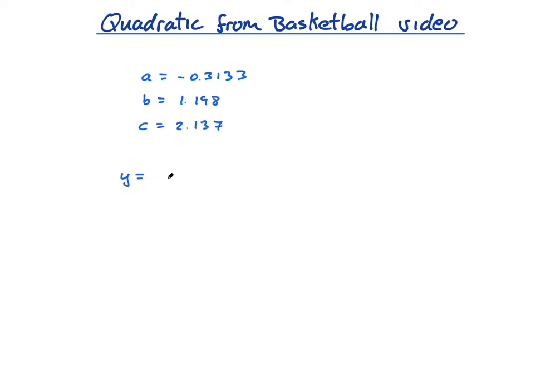So my function is y = −0.3133x² + 1.198x + 2.137. That's just what I wanted to show you in this lesson. In the next lesson, I'm going to take this function and show you different ways we can analyze it using calculus and our knowledge of quadratics — to find maximums, launch angle, the angle at which it reaches the basket, and how you can use this in an IA, like comparing it to someone else's shot or looking at how to improve your shot using the quadratic.